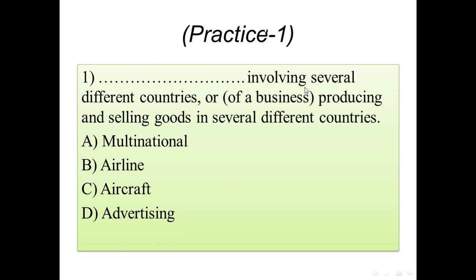Practice number one: blank — involving several different countries, producing and selling goods in several different countries. Options: A) multinational, B) airline, C) aircraft, D) advertising. The right vocabulary is 'multinational', because many different companies in different countries are united, producing and selling goods across several different countries — that is what a multinational does.